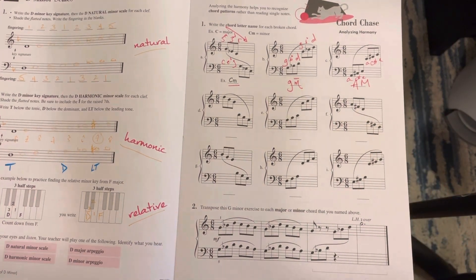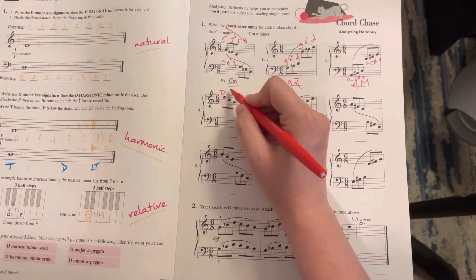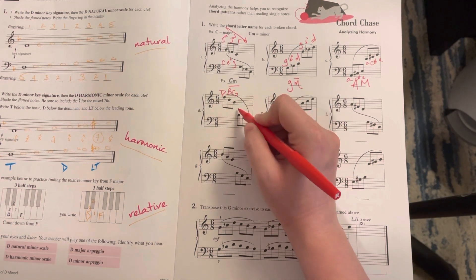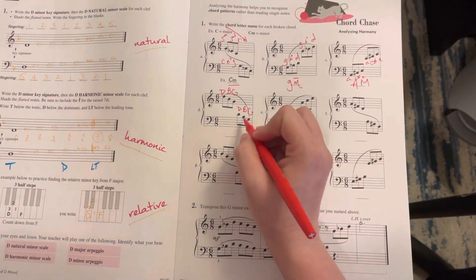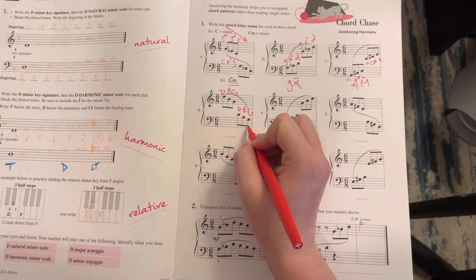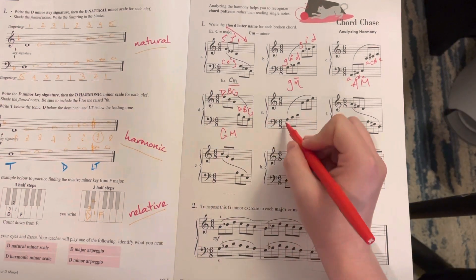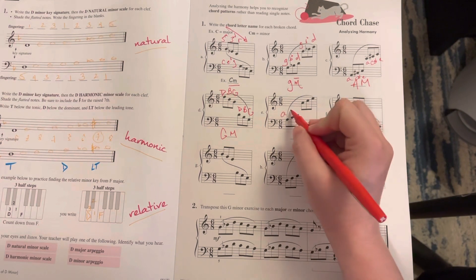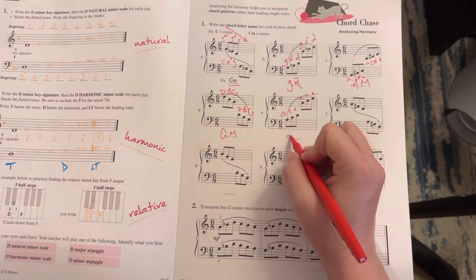And then we have descending D, B, G - this is G, B, D, third on a third, and that's G major. Next is ascending A, C, E - this is A minor.